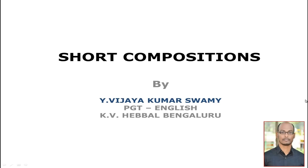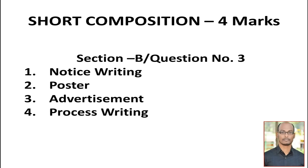Short compositions carry four marks; they come under section B, question number three. The topics are notice writing, poster preparation, advertisement, and process writing — all for four marks. In the question paper you will get two questions out of these four, and you have to attempt only one question which carries four marks. Now, let us take the first topic: notice writing.